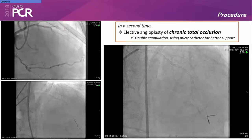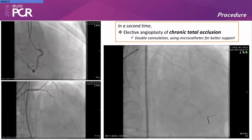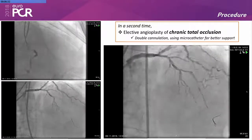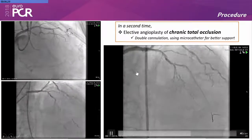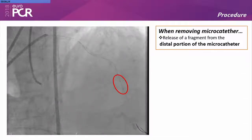In a second time, an elective angioplasty of the CTO was scheduled. We used a double cannulation and a microcatheter for better support. After successful passage of the guide wire, when we were removing the microcatheter, we observed the release of a small fragment from the distal portion of the microcatheter.